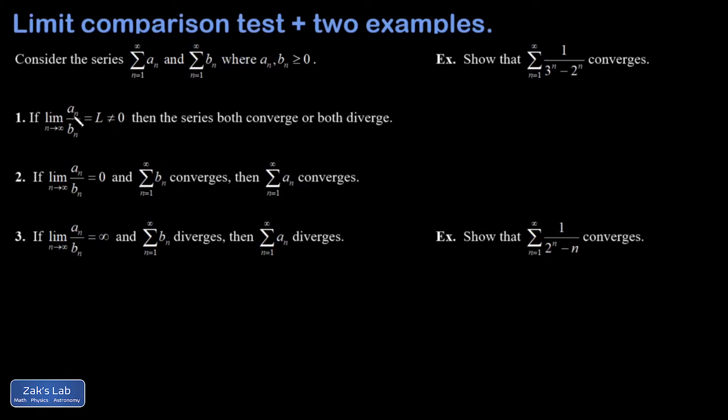So if I look at a ratio of the terms of the two series and I take the large n limit of that and it settles down to some finite number L, then both series are going to converge or both series are going to diverge.